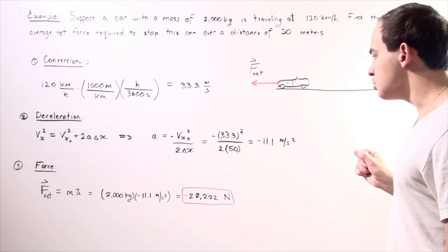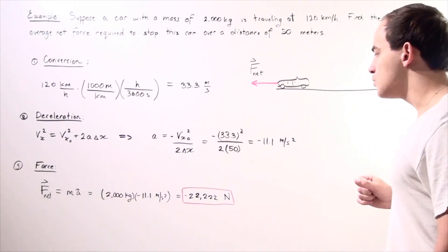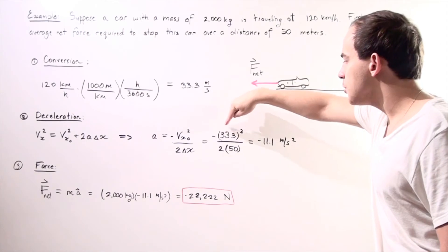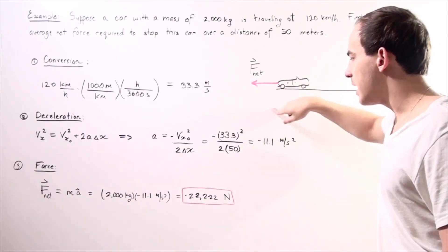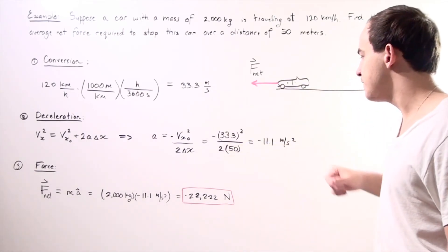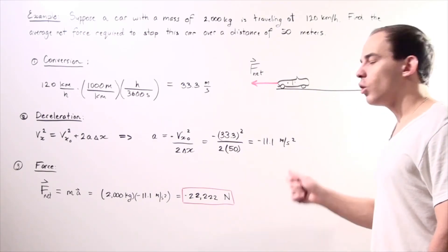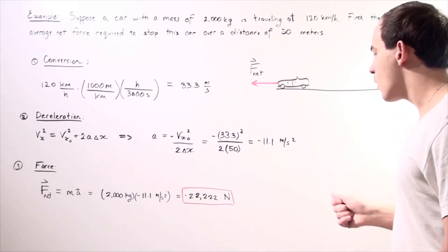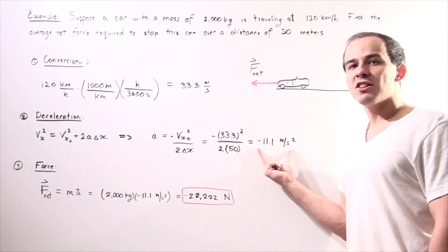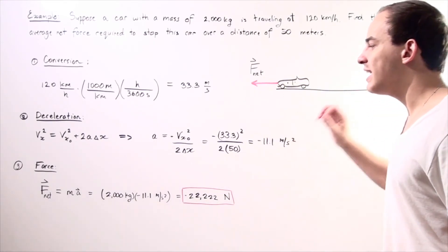So we plug in our values, and we get negative 33.3 squared divided by 100, so 2 times 50, equals negative 11.1 meters per second squared. So this is our deceleration, which is assumed to be constant.